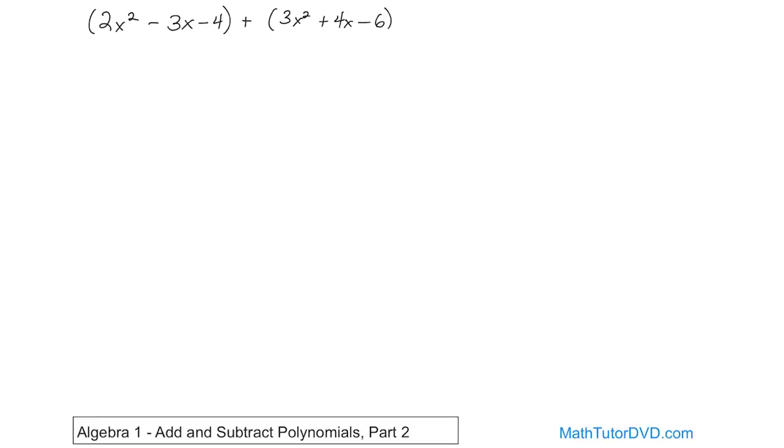All right, so you can rewrite everything and drop the parentheses if it helps you. You definitely don't have to do it, but let's just go ahead and do it in this case. So what we have is 2x squared minus 3x minus 4 plus 3x squared plus 4x minus 6.